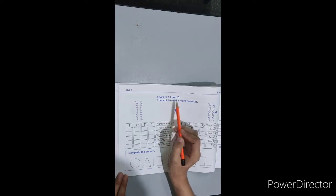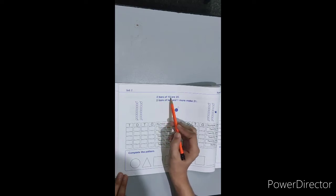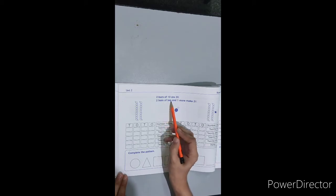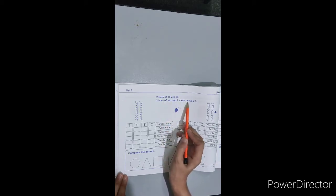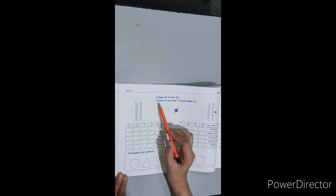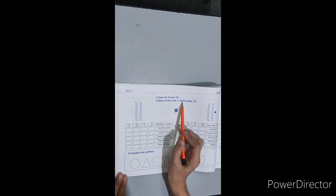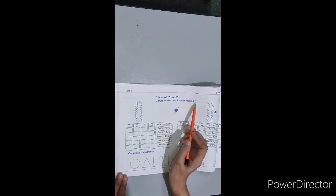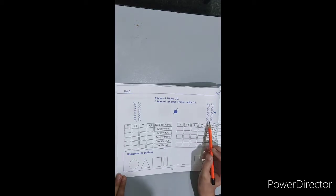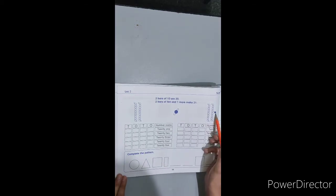Two bars of 10 are 20. Two bars of 10 and one more make 21.